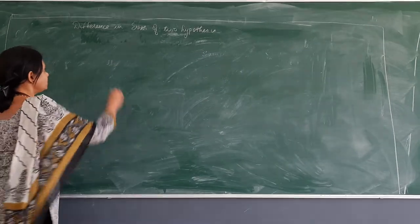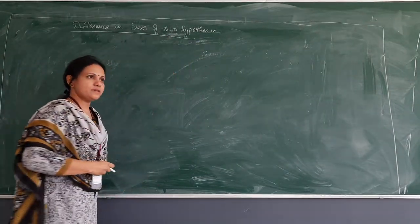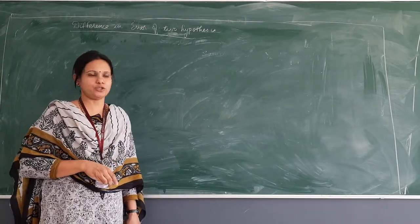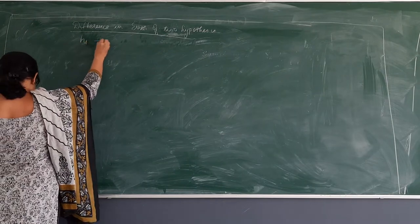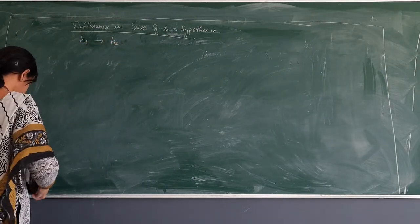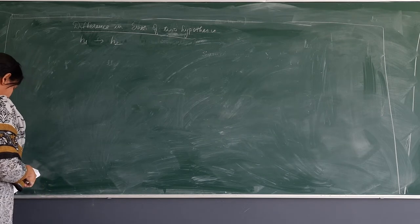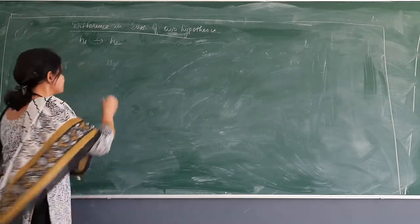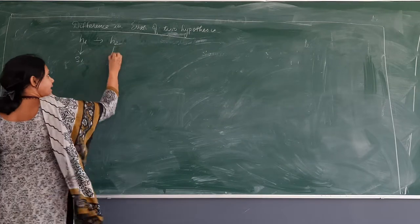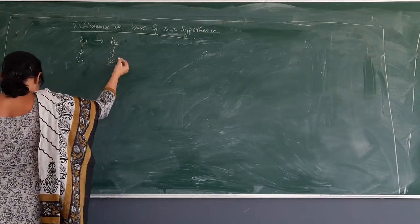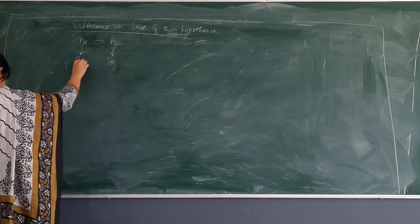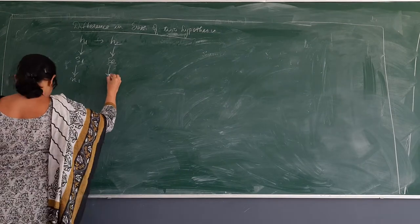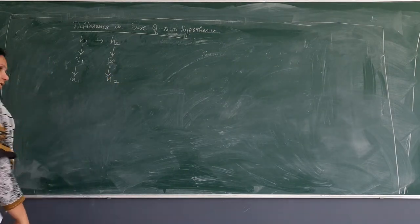Hello everyone. Now assume a case where we have two hypotheses: H1 and H2. H1 is one hypothesis and H2 is the other hypothesis. H1 is tested on a sample S1 and H2 is tested on a sample S2. S1 is a sample containing N1 randomly drawn instances and S2 is a sample containing N2 randomly drawn instances.